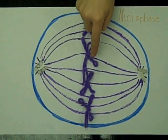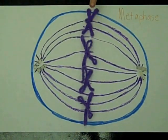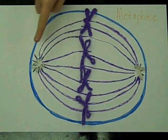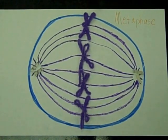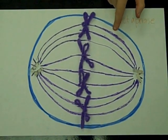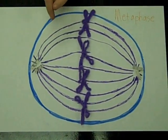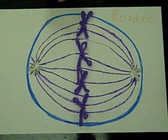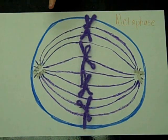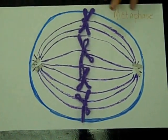Chromosomes line up, end to end, in the middle of the cell, the same distance from both poles. The spindle microtubules attach to different sides of the chromosomes, each tugging at the sister chromatids to pull them toward the poles.